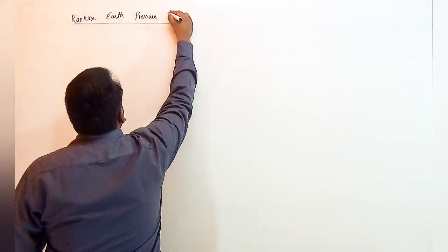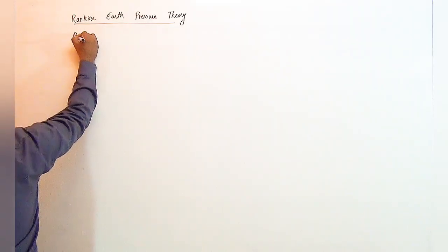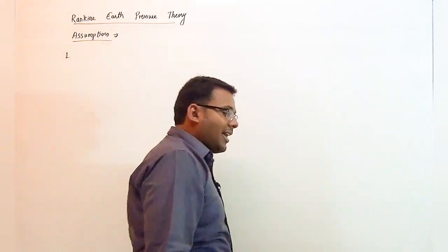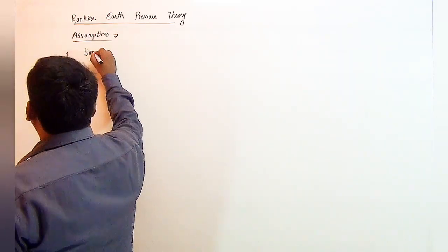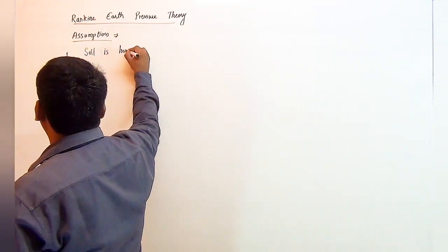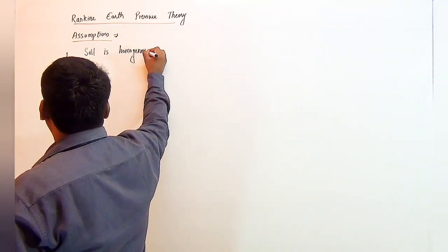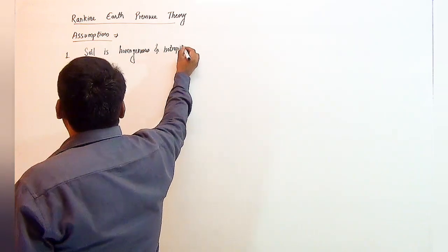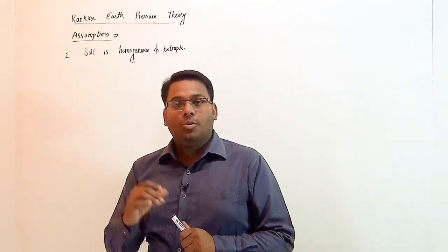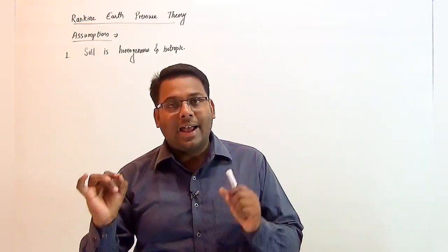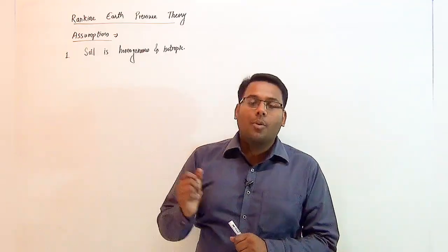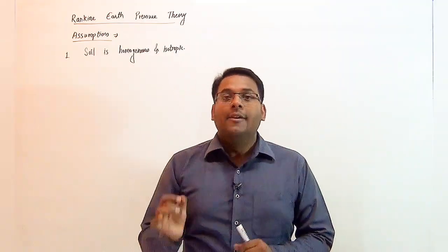First of all, we are going to study about the assumptions of this particular theory. The first assumption is that soil is homogeneous and isotropic. Homogeneous means that the property of the soil at every point is the same — the property of soil does not vary with location or space. Isotropic means that the property of soil will not vary with direction.